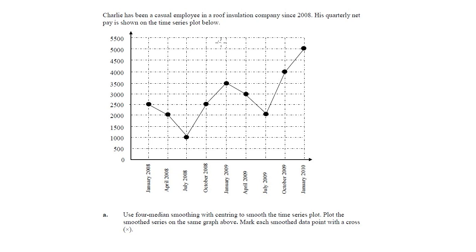The question says: Charlie has been a casual employee in a roof insulation company since 2008. His quarterly net pay is shown on the time series below. We're asked to use four median smoothing with centering to smooth the time series plot and plot the smoothed series on the same graph, marking each smoothed data point with a cross. So we're going to have to do this in two steps.